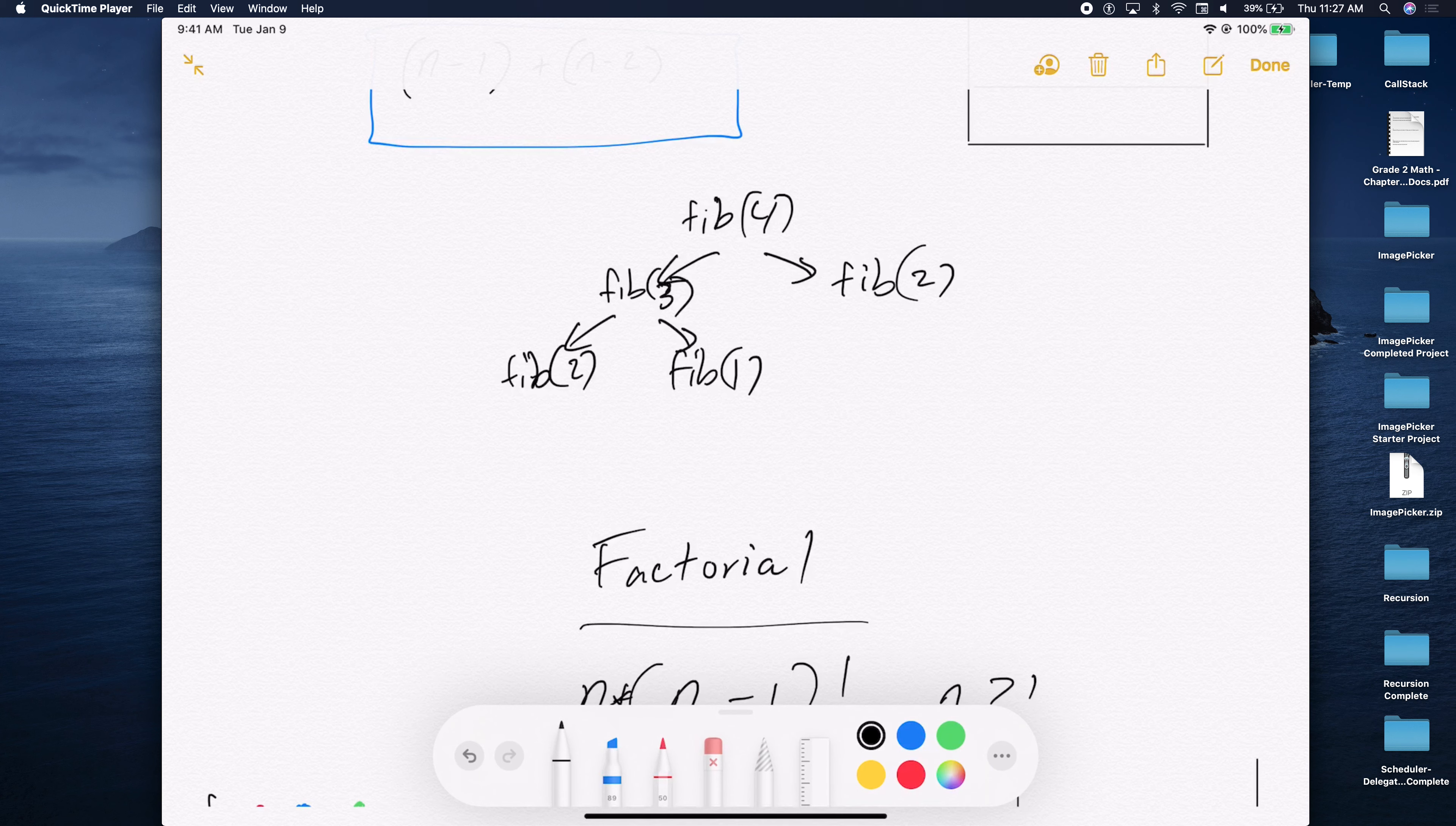So Fibonacci of 2, right? And Fibonacci of 1. And Fibonacci of 2, we don't even have to do it because we know what value it returns, right? What value does it return? One. What value does 1 return? One. What value does 2 return? One. Well, let's stop here. What do we have to do with the values?